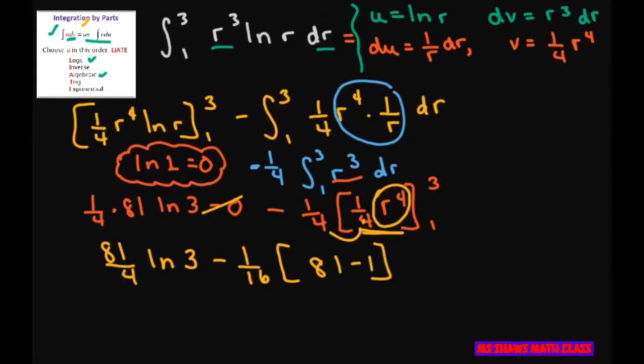Cleaning that up, you're going to get 81 divided by 4 ln 3 minus 80 divided by 16, which simplifies to 81 divided by 4 ln 3 minus 5.